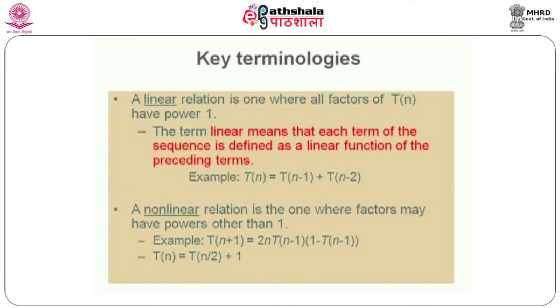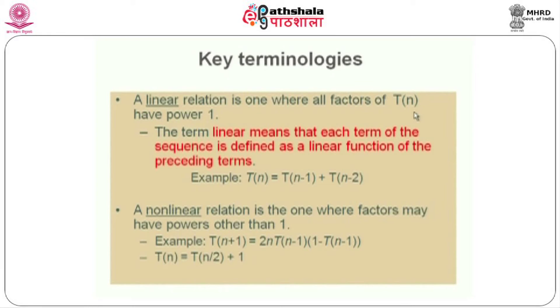The most difficult part in recurrence equation analysis is the formulation of the recurrence equations. But let us review some key terminologies before solving them. A recurrence equation is called a linear relation if all the factors of T(n) have powers of 1. For example, T(n) = T(n-1) + T(n-2) is a linear relation because all the terms have the power of 1 only.